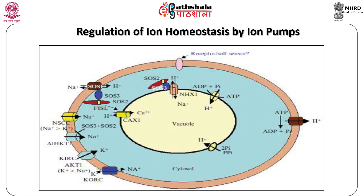Various ion pumps include: potassium inward rectifying channel (KIRC), histidine kinase transporter (HKT), non-specific cation channel (NSCC), potassium outward rectifying channel (KORC), sodium-hydrogen antiporters SOS1, vacuolar sodium-hydrogen exchanger (NHX), and hydrogen-calcium antiporter CAX1. Sodium extrusion from plant cells is powered by an electrochemical gradient generated by hydrogen ATPases, which permit sodium-hydrogen antiporters to couple passive movement of hydrogen inside along the electrochemical gradient with extrusion of sodium out of the cytosol.